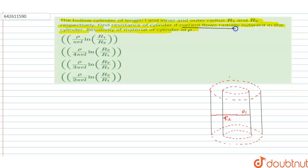Firstly, given the current flows radially outward in this cylinder, the direction of the current is radially outward. Let us consider this is the direction of R.